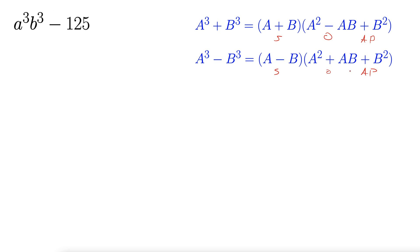Sometimes it helps to rewrite these a bit. Let's write this as (ab)³ - 5³.